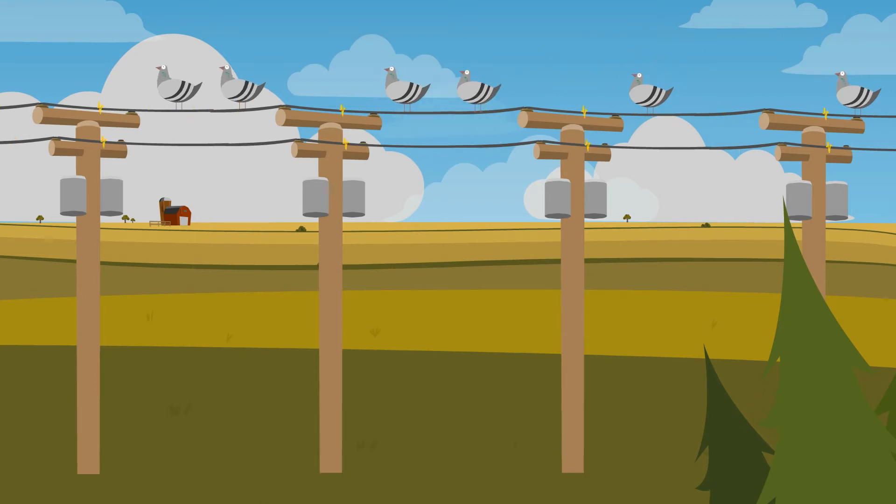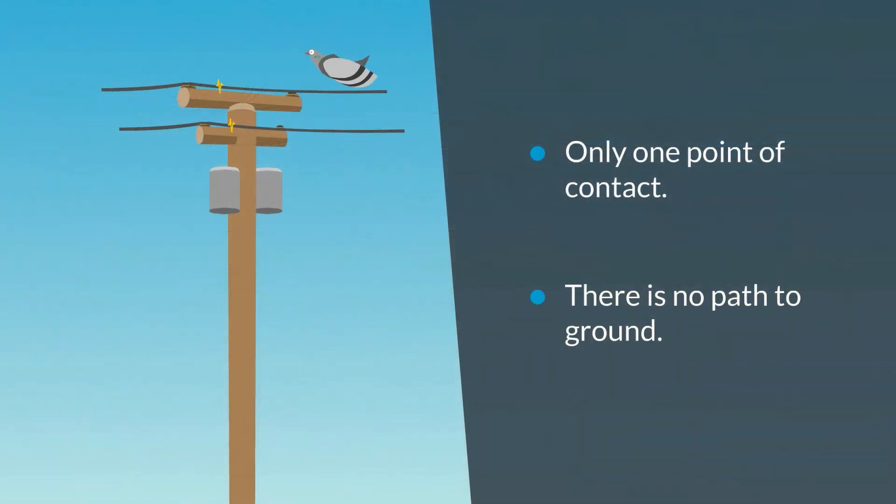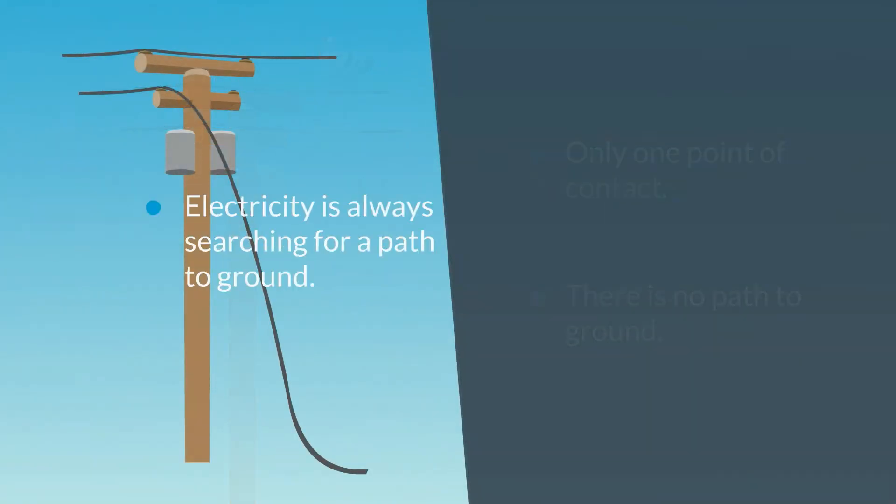Ever wonder why birds can land on a high voltage power line and safely fly away? The bird isn't shocked because it's at one point of contact and doesn't provide the electricity a path to ground.